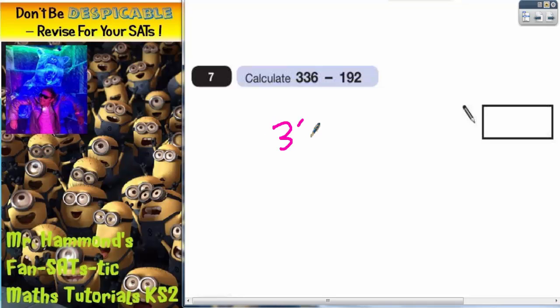So it's going to be 336 take away 192. And now we're ready to do it.